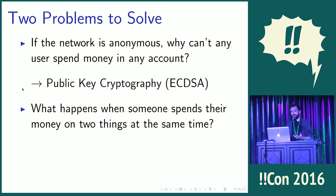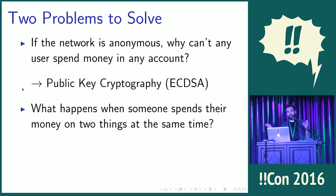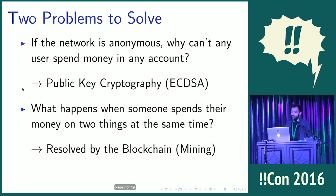Imagine there's an account that has five dollars in it and I simultaneously spend that money on two different things at the same time. Some nodes in the peer-to-peer network are going to receive one transaction first and some nodes are going to receive the other first. There's only five dollars to spend, so I can't spend it twice. That conflict is resolved by Bitcoin mining. Most people think mining is how you create new bitcoins — it's actually how you solve the double-spending problem. The new coins are just an incentive to get people to do it.